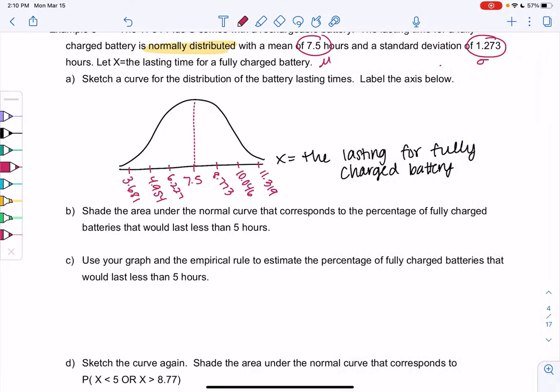So part B, shade the area under the normal curve that corresponds to the percentage of batteries that would last less than 5 hours. So I don't quite have 5, but I'm going to say 5 is close enough to 4.954. It's close enough, we're approximating. And then less than would be to the left. So we'll shade less than.